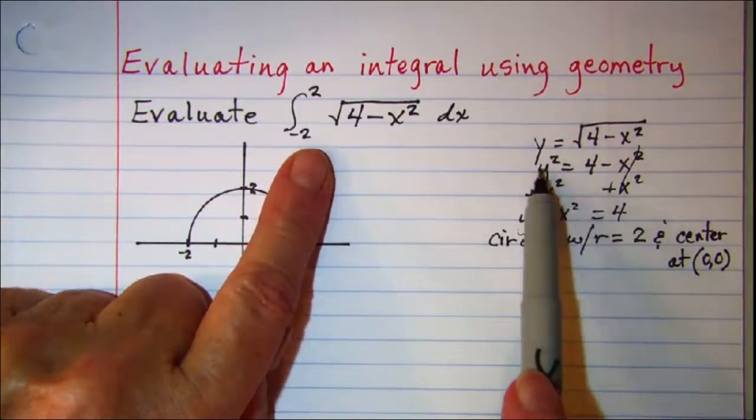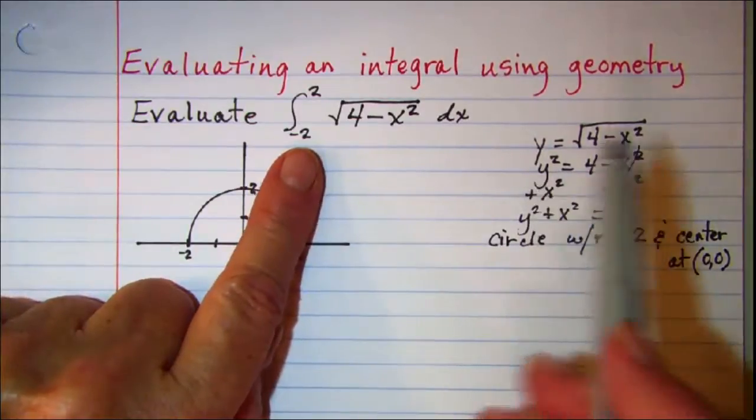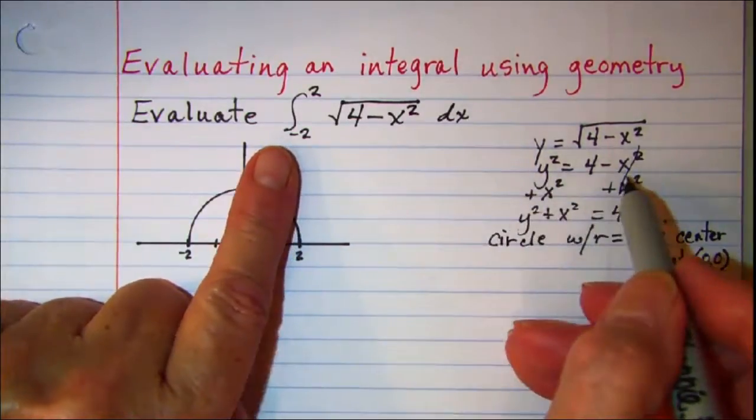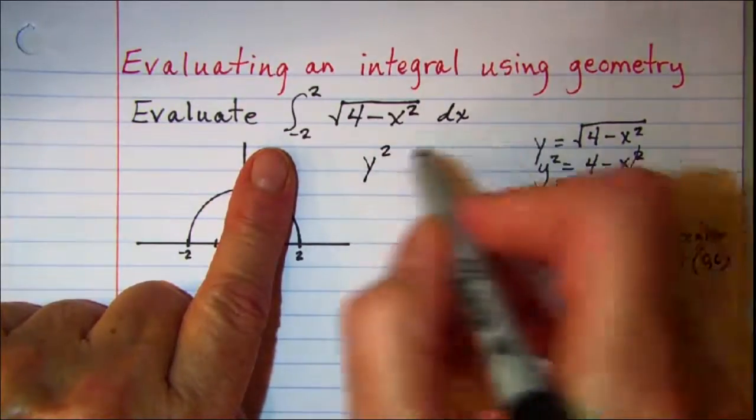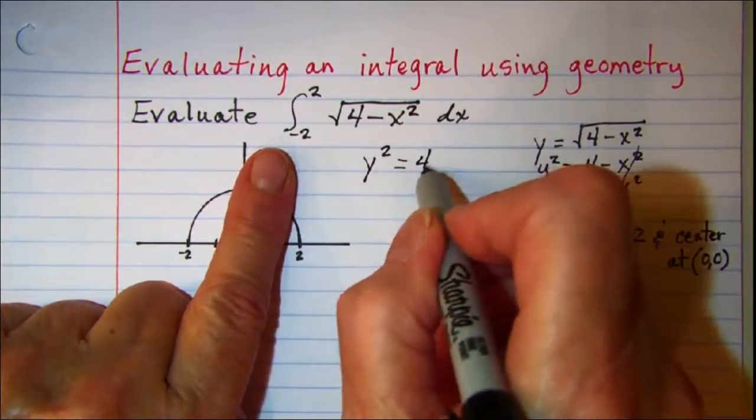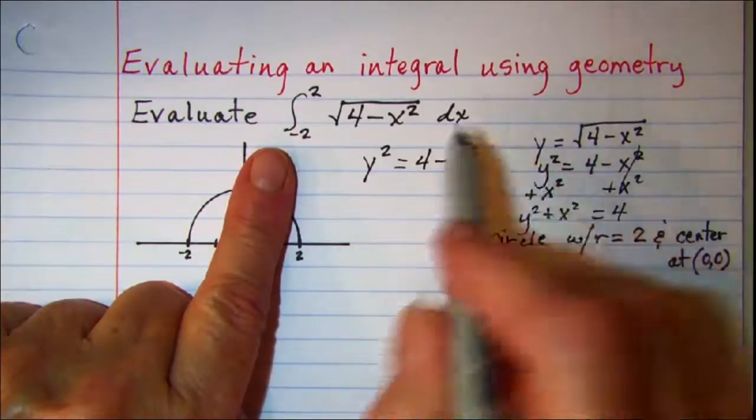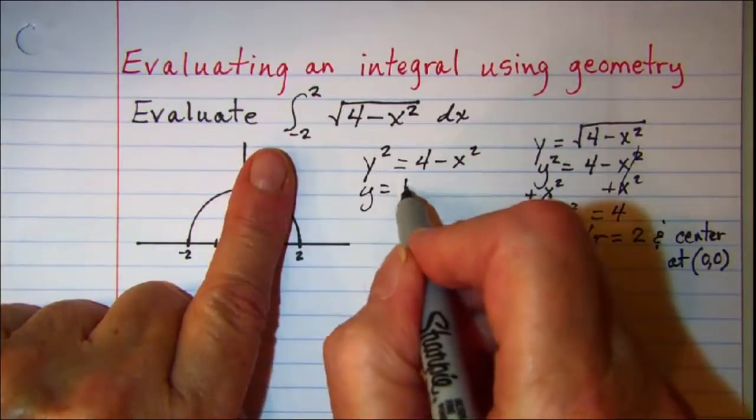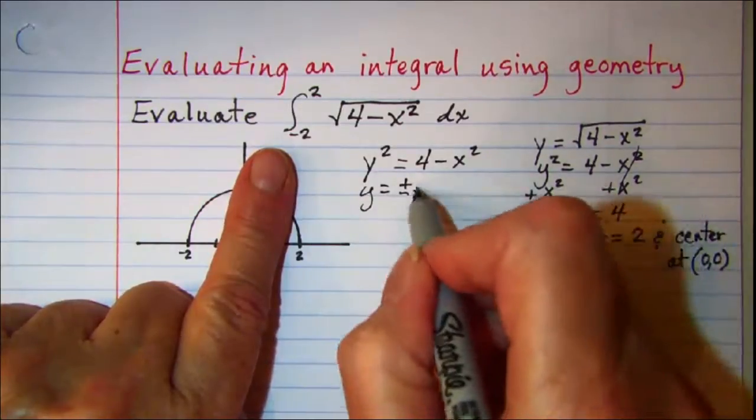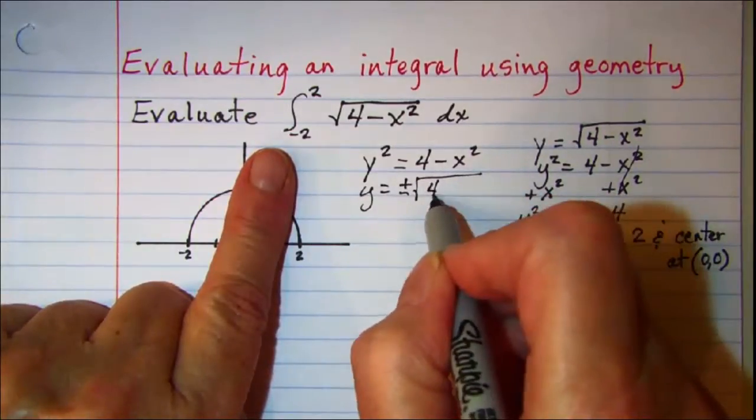We now need to look at this equation y squared equals 4 minus x squared and if we square root both sides we get y equals plus or minus the square root of 4 minus x squared.